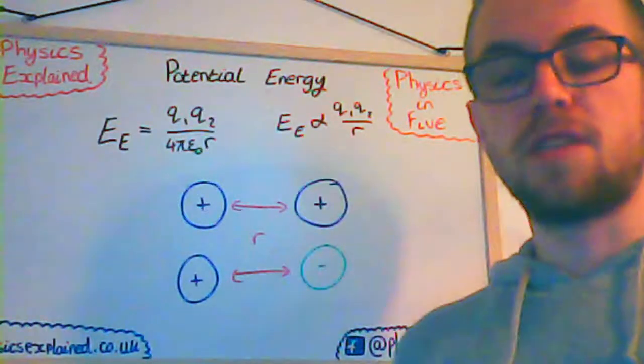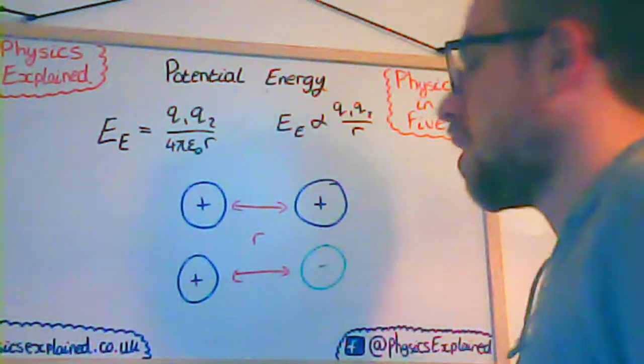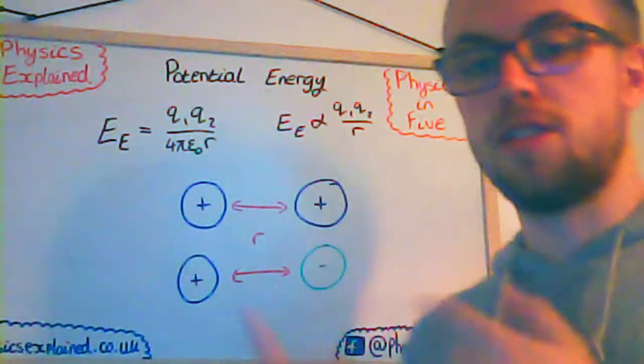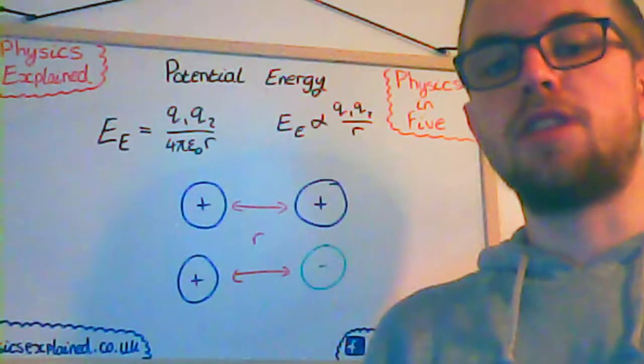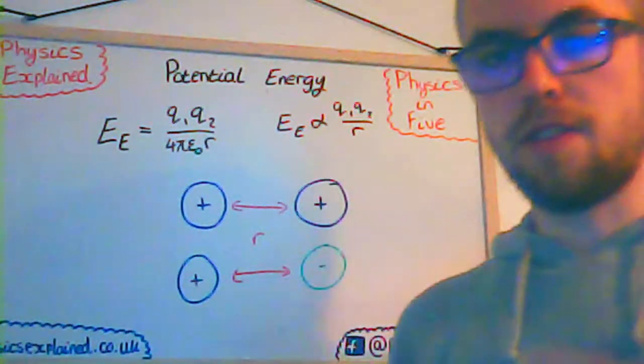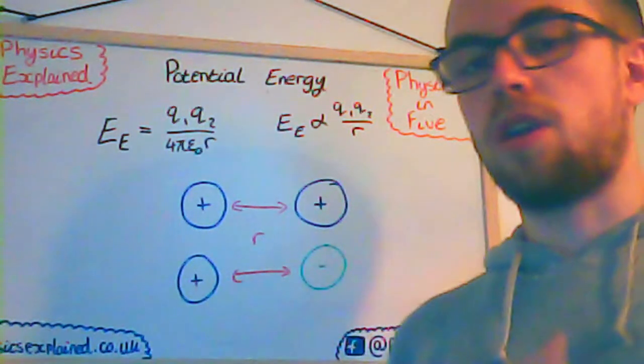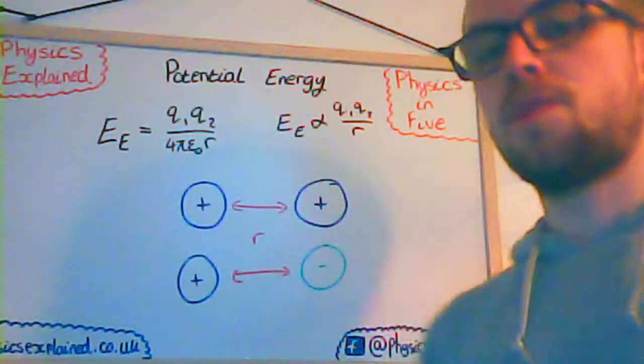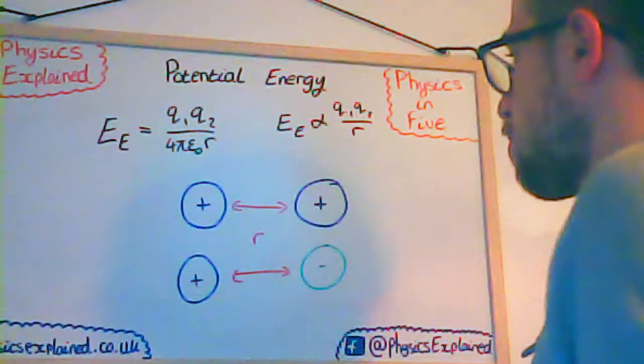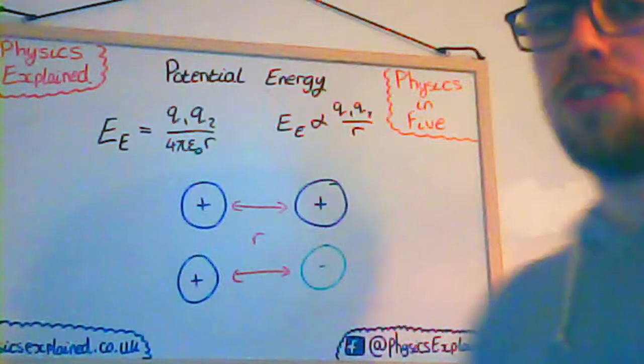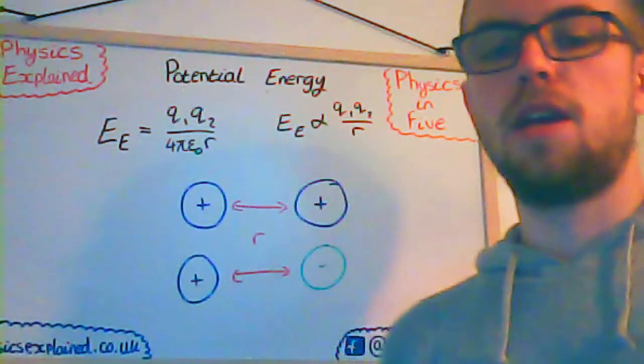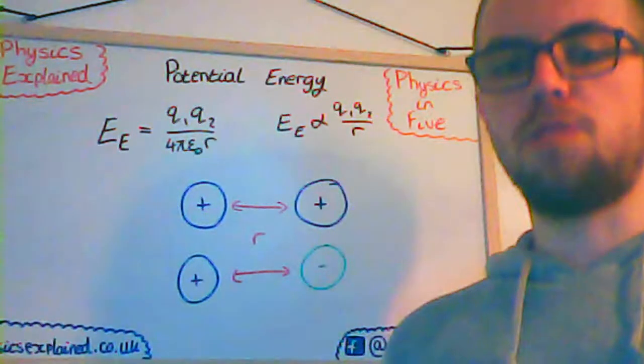I think we've got enough time left just to cover electric potential energy, and then we'll get onto magnetic and chemical potential energy in the next video. The electric potential energy is to do with charges and their effect on each other. It's quite often called the Coulomb potential after the scientist, and it's proportional to the charge on both particles and the distance between them.